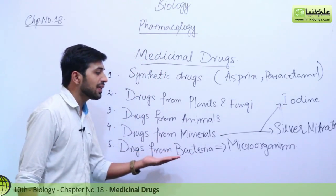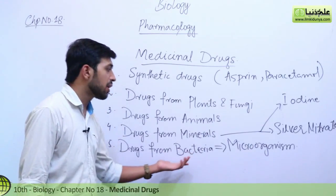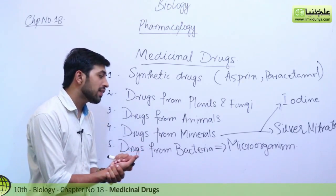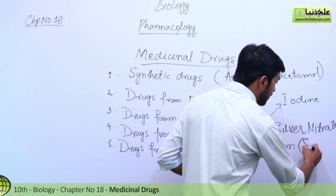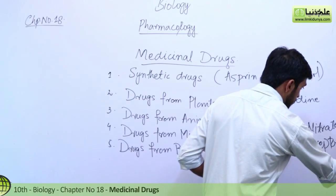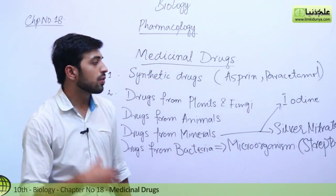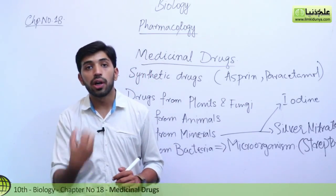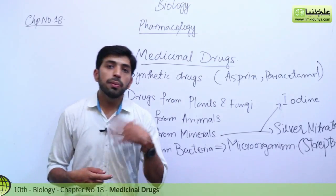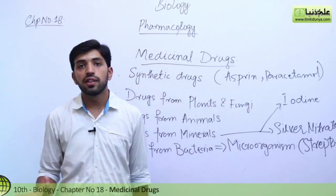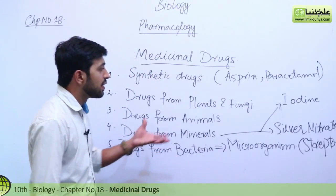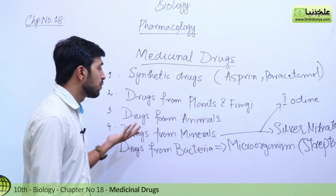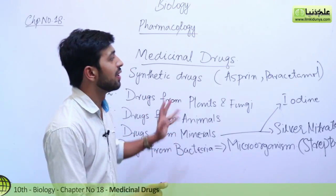Drugs can also come from bacteria. Bacteria, which come under microorganisms, can be used to synthesize drugs and medicines. A drug synthesized from bacteria was streptomycin. Scientists discovered streptomycin from soil minerals. Different kinds of antibiotics can be developed this way, including teramycin and tetracycline. These are all drugs sourced from synthesized materials, plants, animals, and bacteria — these are medicinal drugs.